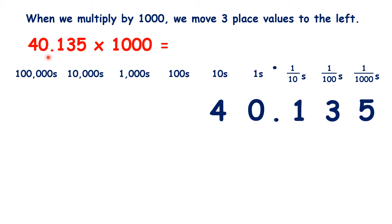Now, what is 40.135 times a thousand? We move the digits three places to the left, and because the decimal point is now at the end of our number, we have a whole number as our answer. So that's 40,135.